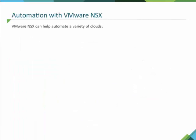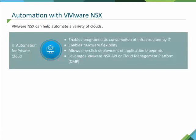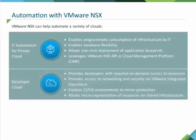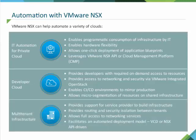VMware NSX can help automate a variety of cloud environments. IT Automation for Private Cloud might be done through vRealize Automation or vCloud Director. Developer Cloud might also be done through vRealize Automation, vCloud Director, or VMware Integrated OpenStack. Multi-tenant infrastructure might be done via vRealize Automation or vCloud Director. VMware NSX can help provide the network isolation between tenants.